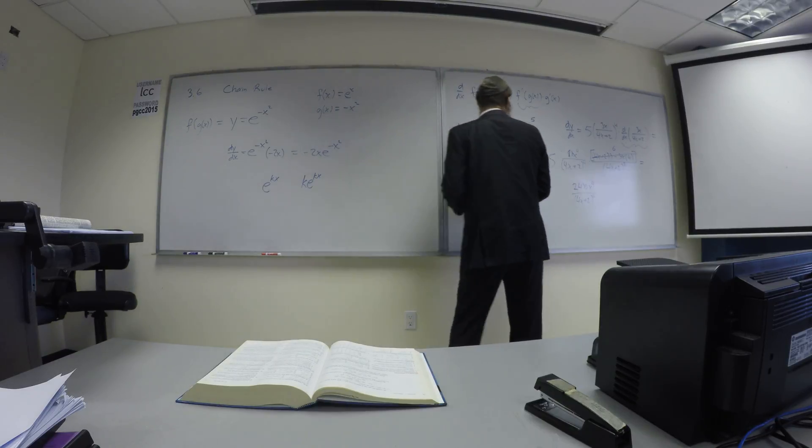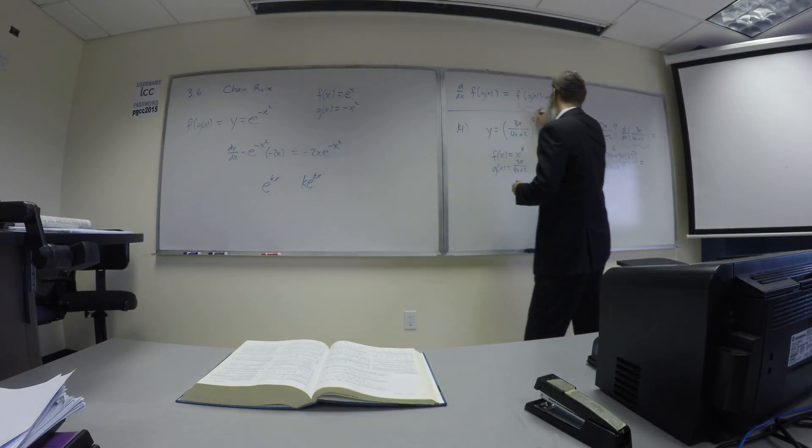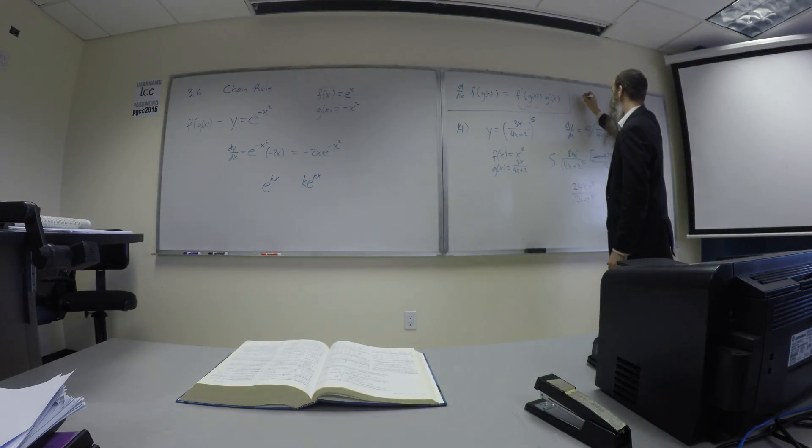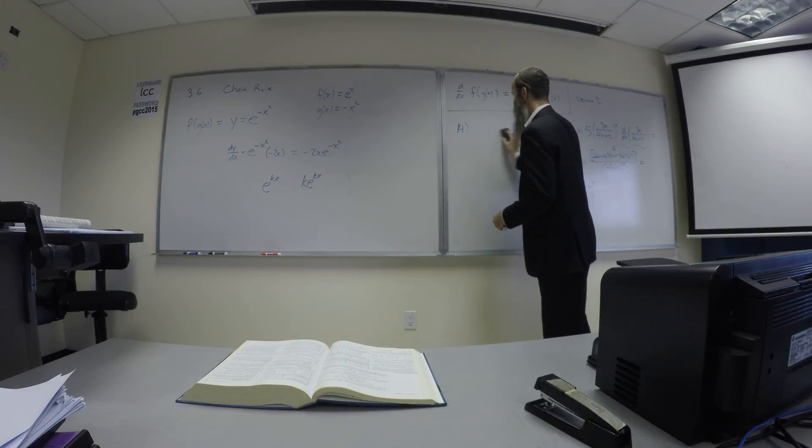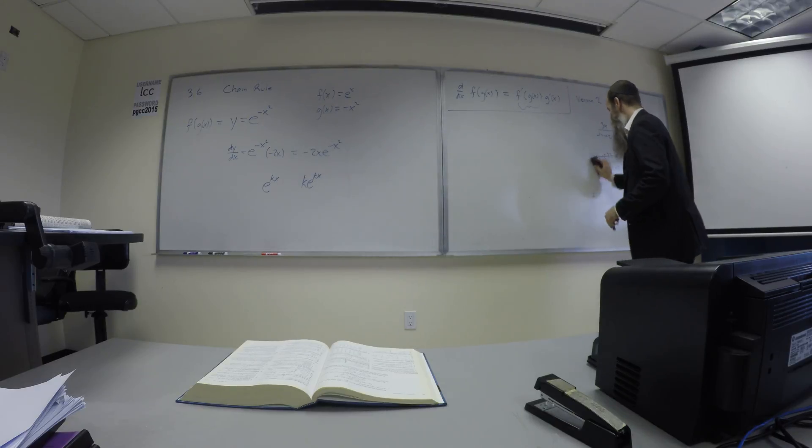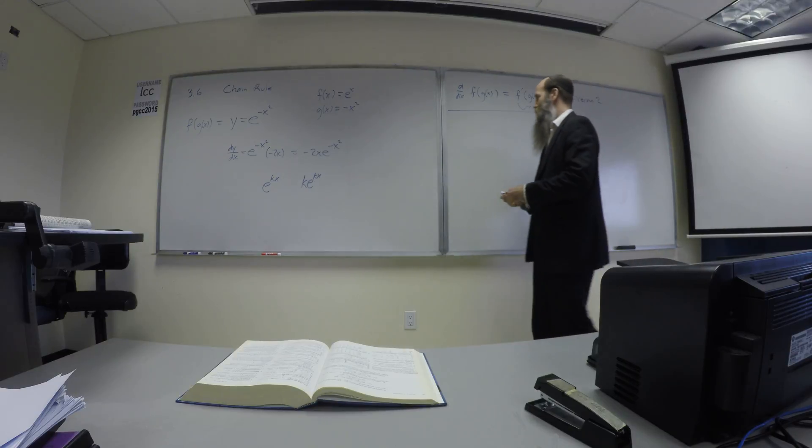All right, so I explained this using this particular structure here. This is called, in the textbook, it's called version two. Version two of the chain rule. Now, I'll write out the symbols for version one. It's really the same thing, of course. But you could see both notations in homework and in the textbooks. Make sure you've seen both.